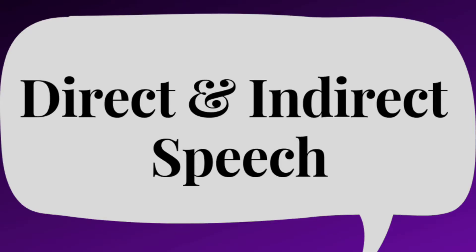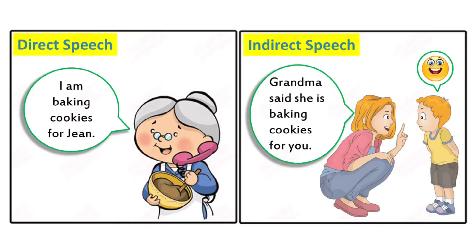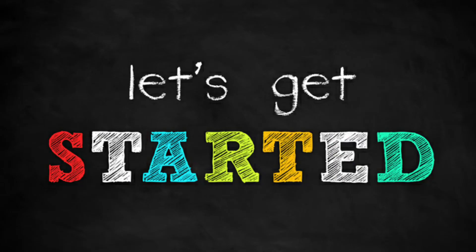So the topic is direct and indirect speech. We will learn what direct and indirect speech are. Direct speech example: 'I am baking cookies for Jian' — this is direct speech. Indirect speech example: 'Grandma said she is baking cookies for you' — this is indirect speech. We will learn more about both in this video. Let's get started.